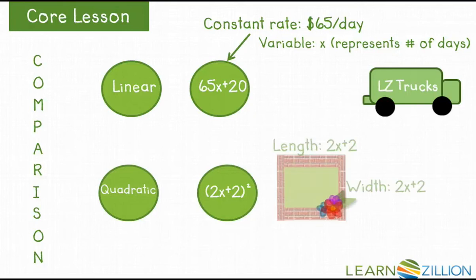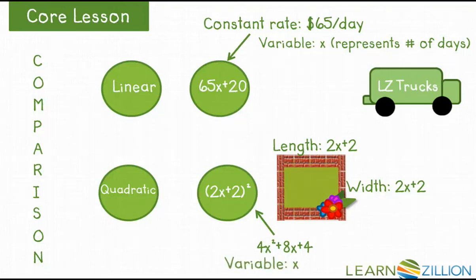And our garden example was 2x plus 2, the whole quantity squared. And if we multiply that together, our area is going to be 4x squared plus 8x plus 4. Now we can actually use the box method or FOIL method, or some sort of distribution method to solve, to come up with that. And then the variable here is x.